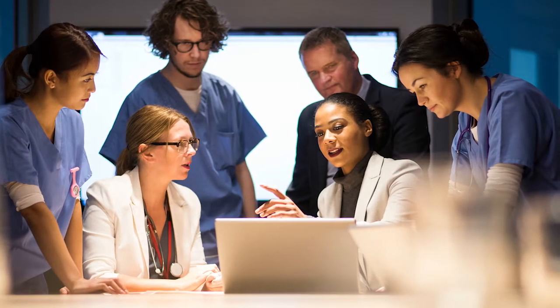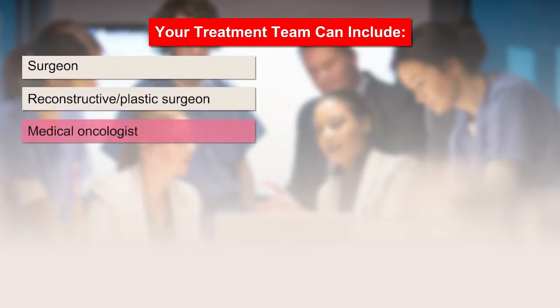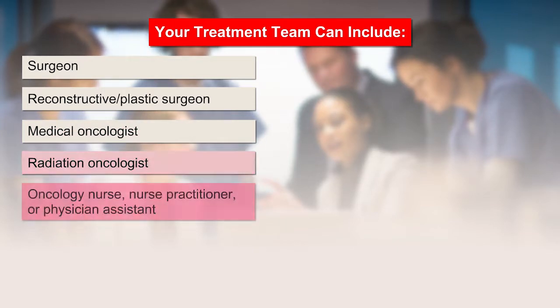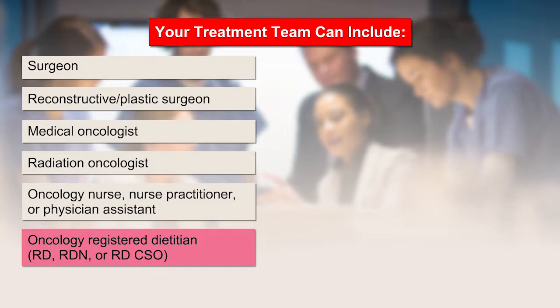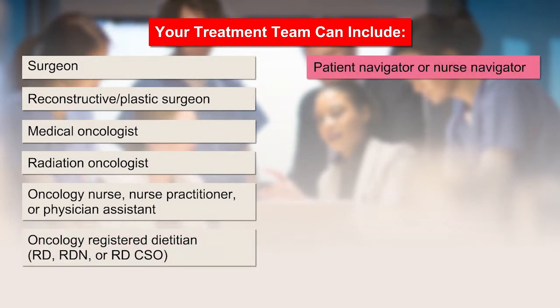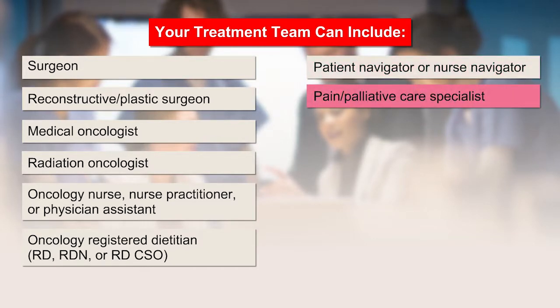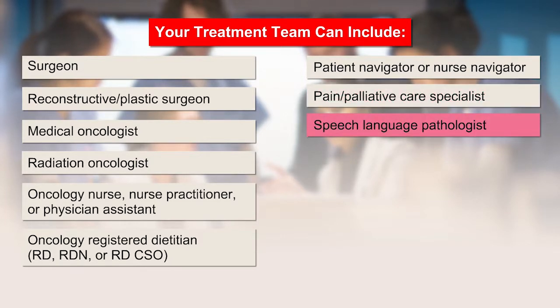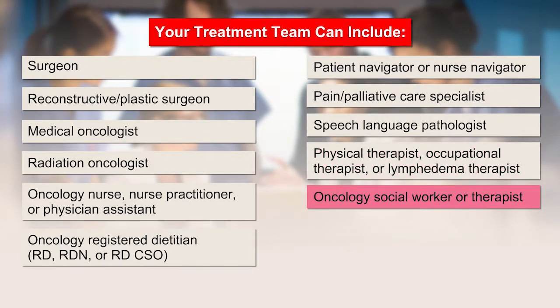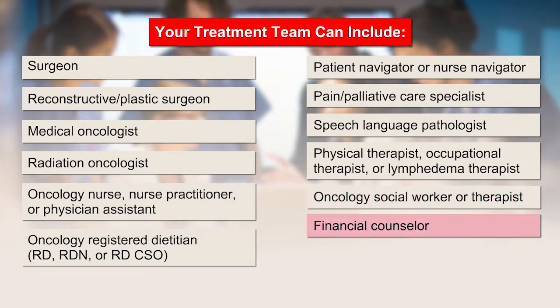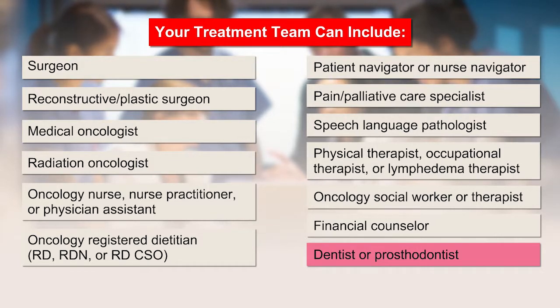Head and neck cancer is usually treated by a team of experts. Your team can include a head and neck surgeon, also called an otolaryngologist, reconstructive or plastic surgeon, medical oncologist, radiation oncologist, oncology nurse, nurse practitioner, or physician assistant, oncology registered dietitian (with credentials RD, RDN, or RD CSO), patient navigator or nurse navigator, pain or palliative care specialist, speech language pathologist who helps with speech, voice, and swallowing problems, physical therapist, occupational therapist, or lymphedema therapist, oncology social worker or therapist, financial counselor, and dentist or prosthodontist — a dentist with special training in replacing missing teeth and jaw structures.